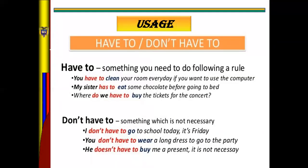Next modal verb: HAVE TO or DON'T HAVE TO. Have to is something you need to do following a rule, and don't have to is something which is not necessary. Have to translates as 'to have to' and don't have to means 'not having to.' When we need to follow a rule or parameter we can use have to, but if something is not necessary we use don't have to.